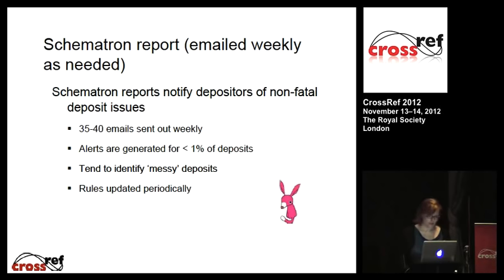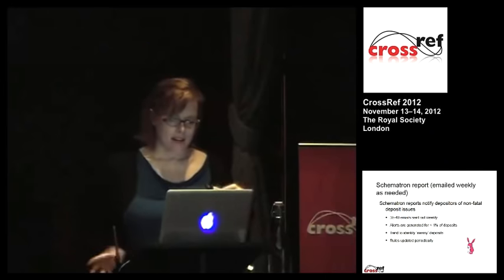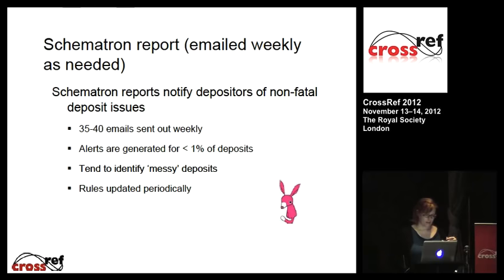The last report I'm going to mention is the Schematron report. Schematron is a validation language, and we use it to identify messy metadata. We need to be flexible and accommodate variances in data, so our deposit schema can't keep all questionable data out without blocking good data as well. So we do this post-deposit metadata review and pick out items we think might need more attention. These are emailed out weekly — we send about 45 reports a week, which is about 1-2% of the membership. If you don't get one, great. But if you do, that means there's probably a problem and you need to pay attention to it.